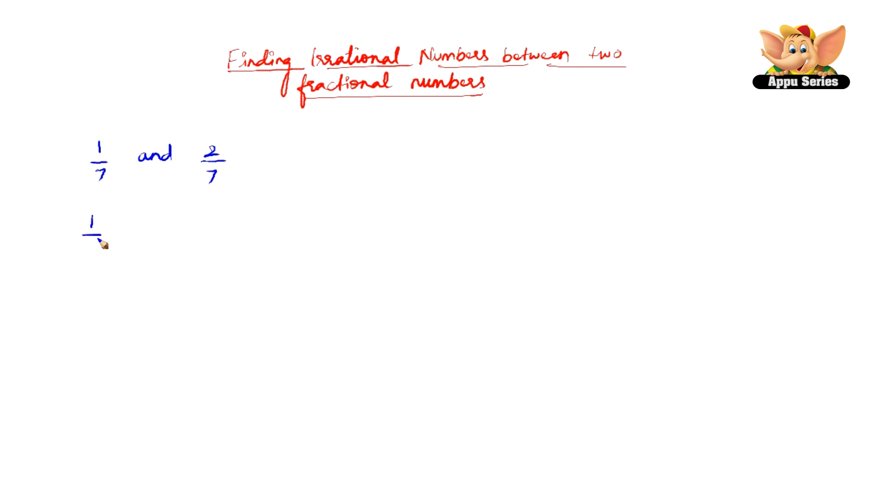So all we have to do is divide 1/7 and we get 0.142857 which is recurring, and divide 2/7 and we get 0.285714 which is recurring as well.